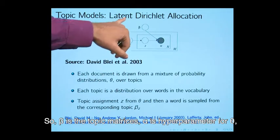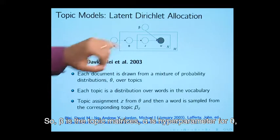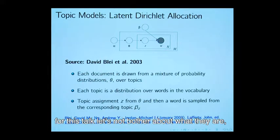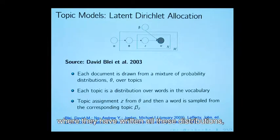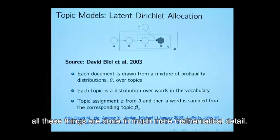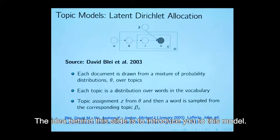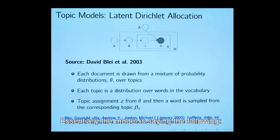Then again you choose another topic for the second word and so on and so forth. Beta is the topic matrices, alpha is hyperparameter for theta. For this talk, let us not bother about what they are. You can read it up in this nice paper which they have written all these distributions in much more mathematical detail. The idea behind this slide is to introduce you to this model.